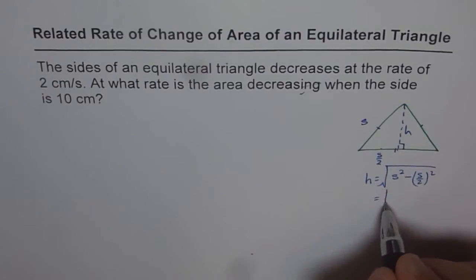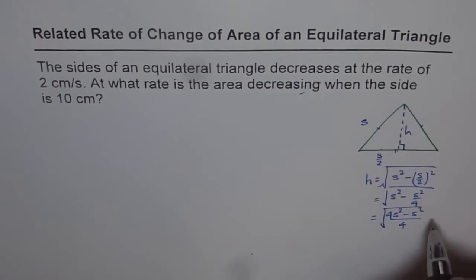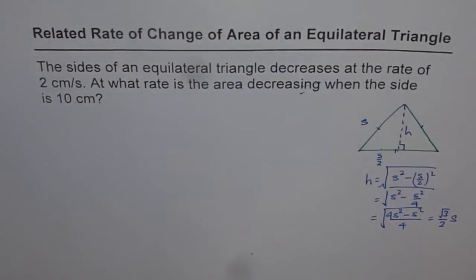So you can find a relation between height and the side in this fashion. And this is square root of (S² - S²/4). And that gives you square root of (4S² - S²)/4. And that is equal to, 4 minus 1 is 3, so square root of 3 on the top, divide by square root of 4 which is 2, and square root of S² will be S. So that is the relation.